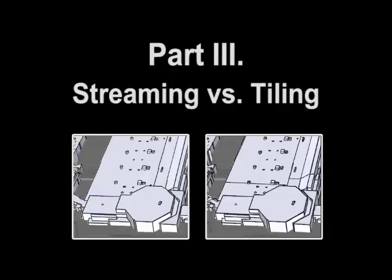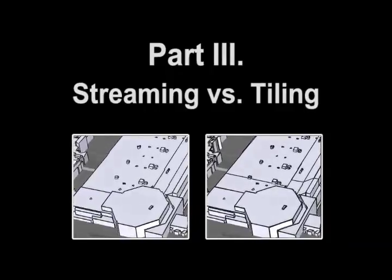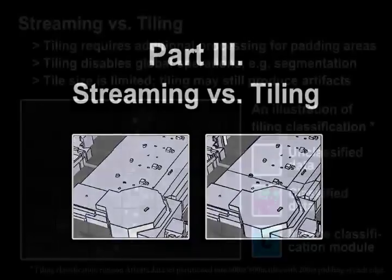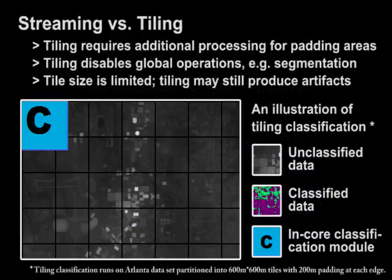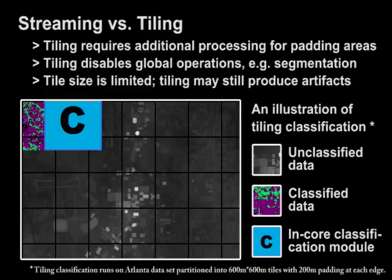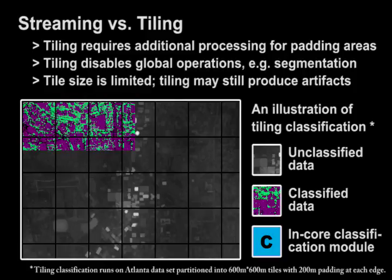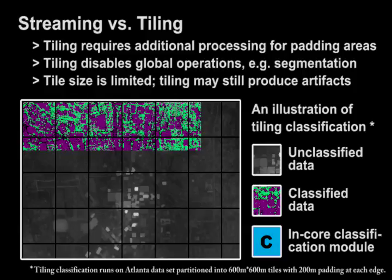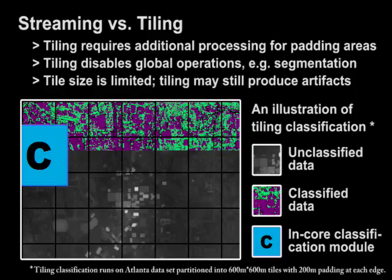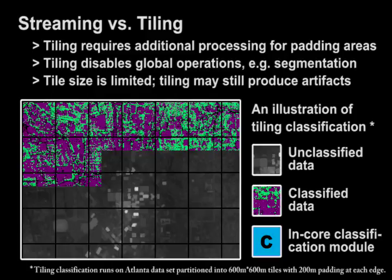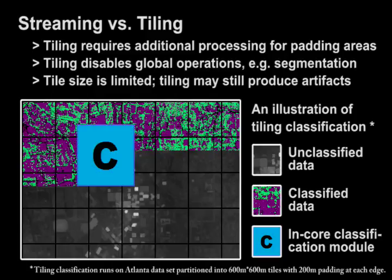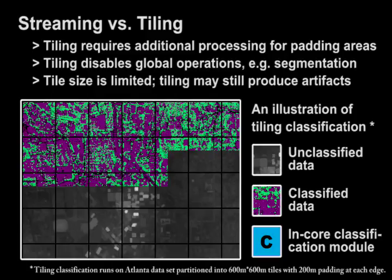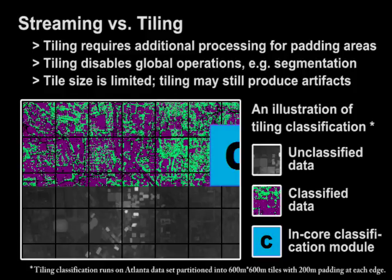In this part, we make comparisons between our streaming method and traditional tiling methods. The traditional tiling method partitions the whole LiDAR data into tiles and processes them one at a time. To remove the boundary artifacts, they introduce padding around tiles as shown here. The data in the padding area is processed multiple times, and thus results in unnecessary overhead.